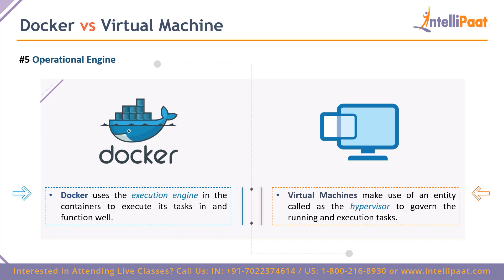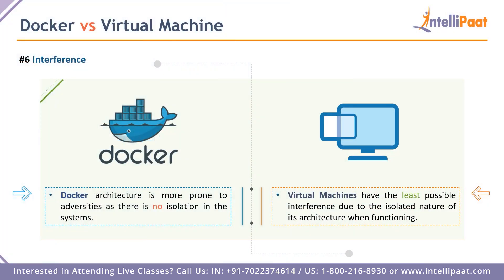Regarding operational engines — the execution engine at the heart of each technology — Docker uses an execution engine present in all containers to ensure tasks and functionalities run smoothly. Virtual machines use a similar but fundamentally different entity called the hypervisor, which serves the same purpose. The key difference is that these two engines operate on entirely different architectures.